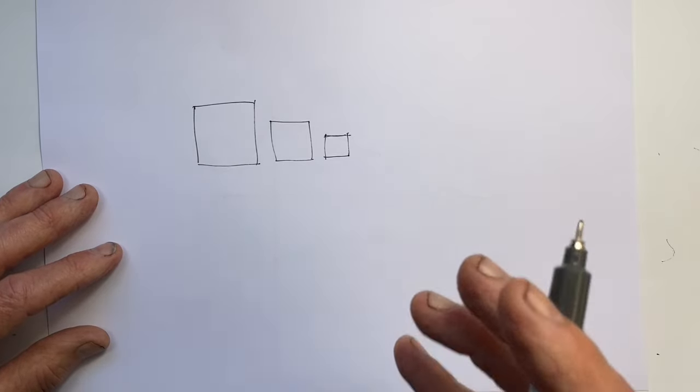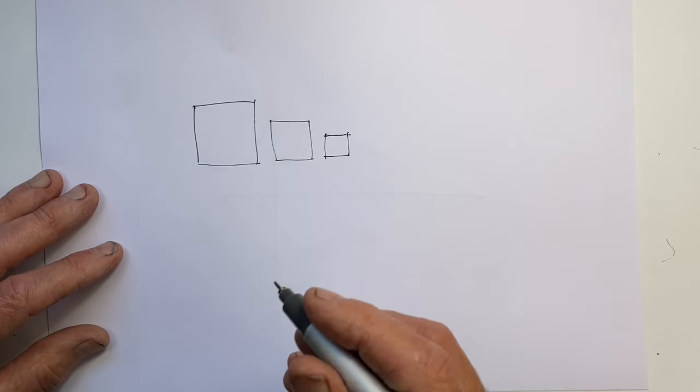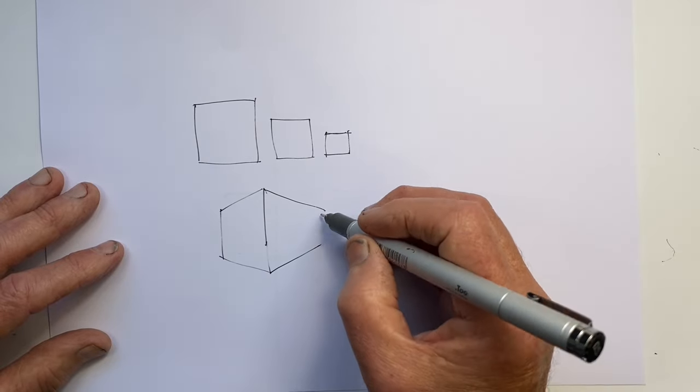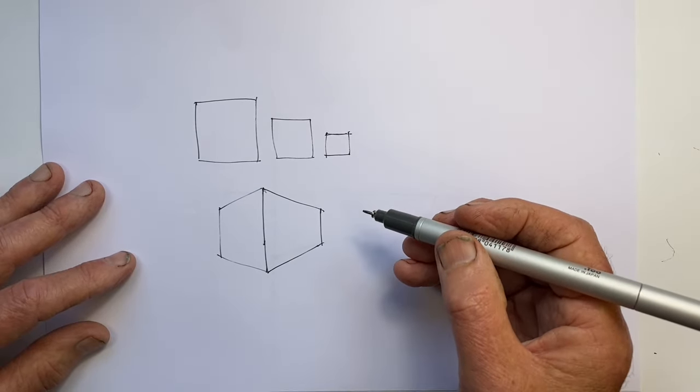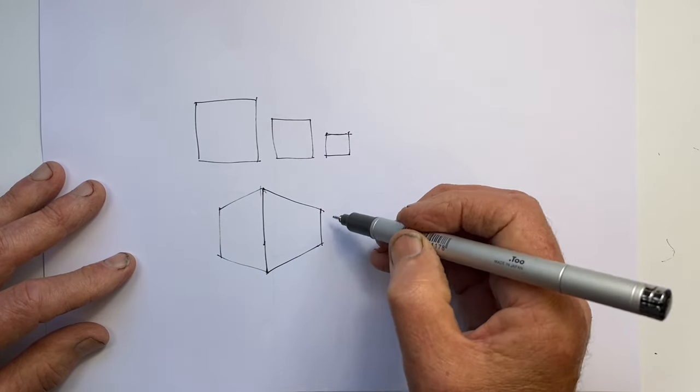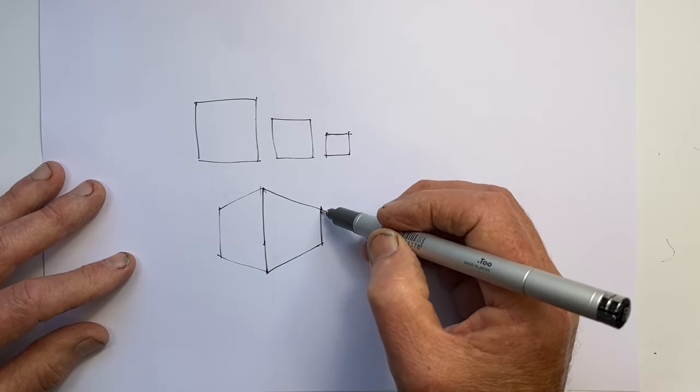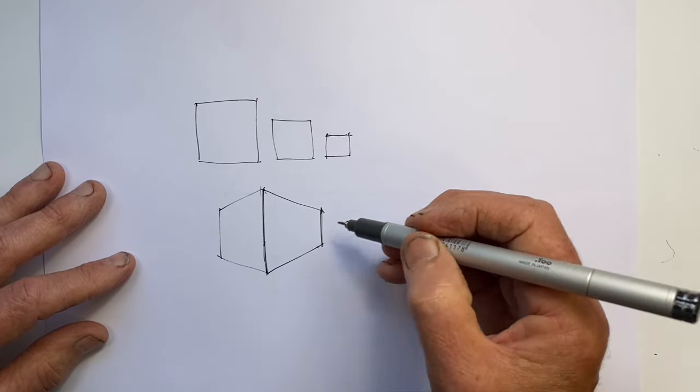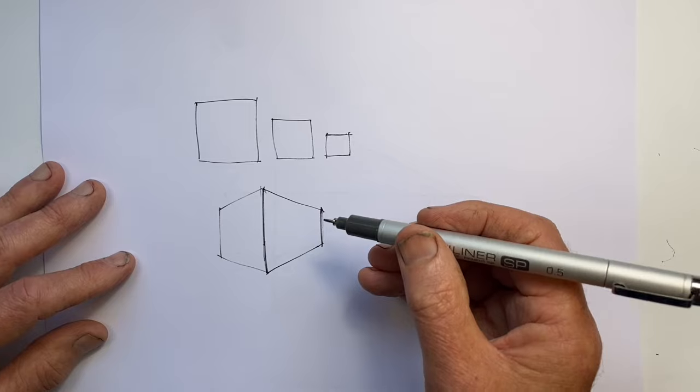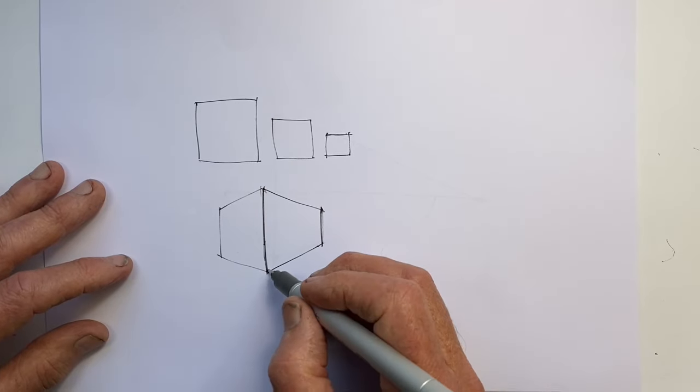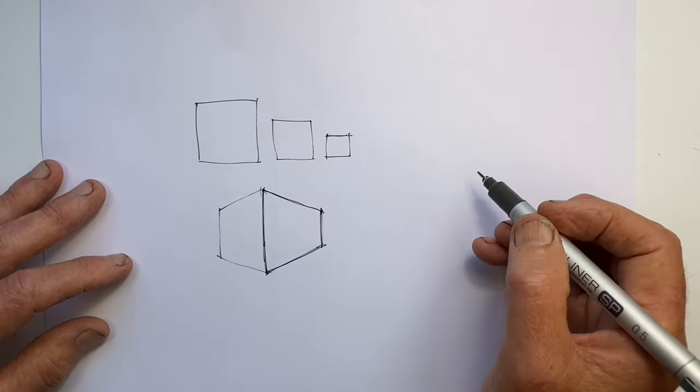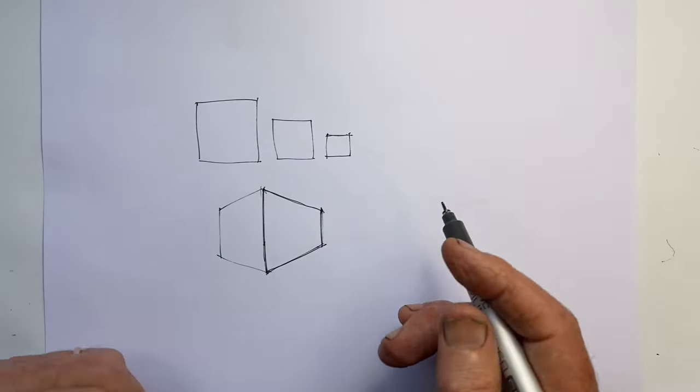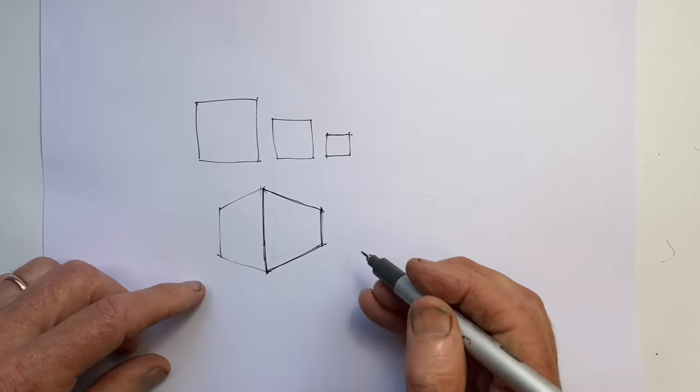But when we have one large object that we view from the side, what happens is that this side is closer than this side. And so because this side is further away from this side, it's smaller, or as we say, shorter, which means these lines have to angle.